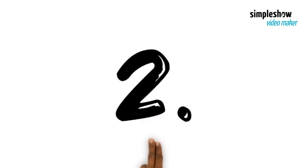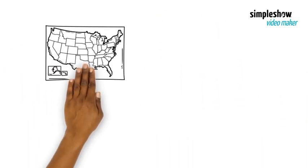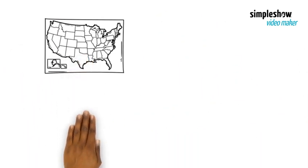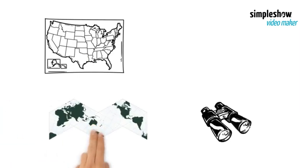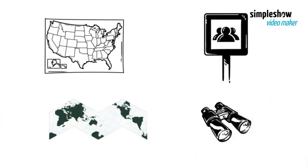Number 2. Maps have three main attributes: Projection, Scale, and Symbolism. All three can be part of distortion.